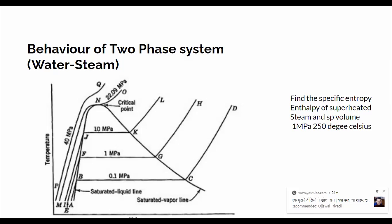Let me show you the steam table. We refer to the pressure table. This is the temperature table, and now we go to the pressure table. If you have the pressure in bars, you can convert — 1 megapascal is 10 bar. So if you have the steam tables in bars, refer to 10 bar; if in megapascals, go to 1 megapascal directly.